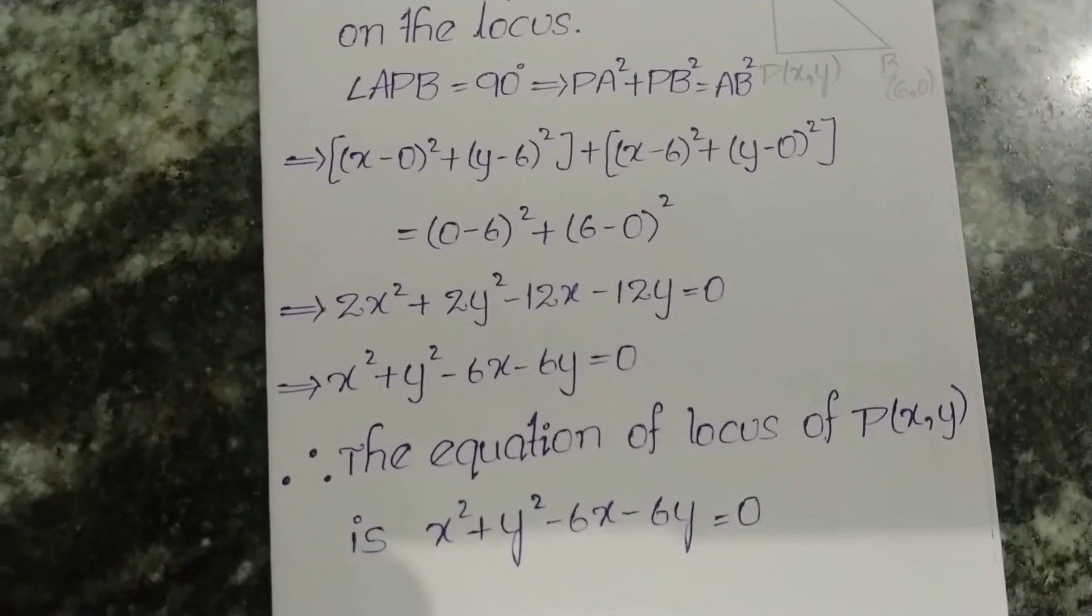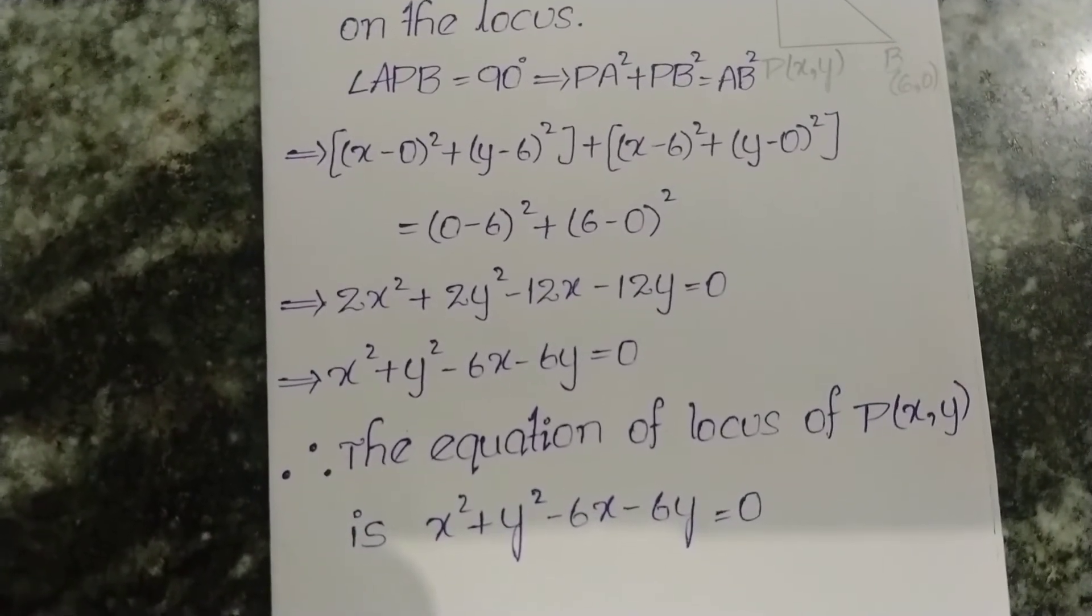This is the required equation of the locus: x² + y² - 6x - 6y = 0.